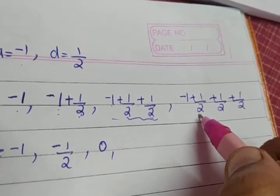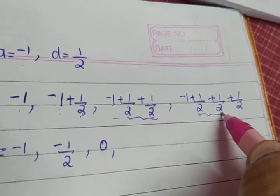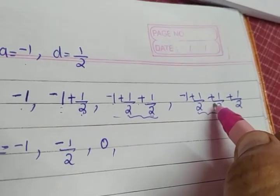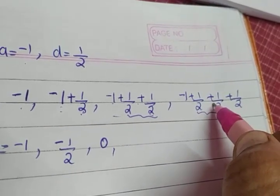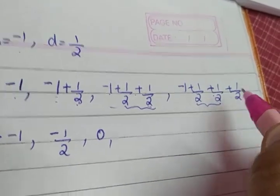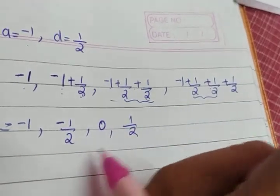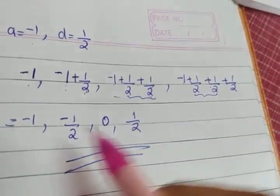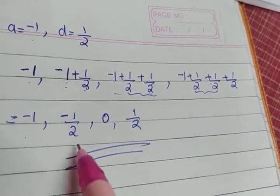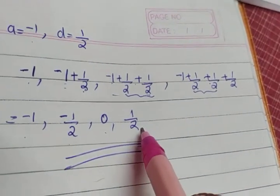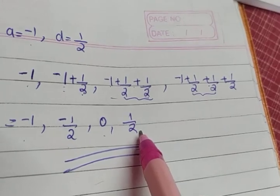Half plus half gives 1, and minus 1 plus 1 gives 0. Adding 1 by 2 gives 1 by 2. So the four terms are: minus 1, minus half, 0, and 1 by 2.